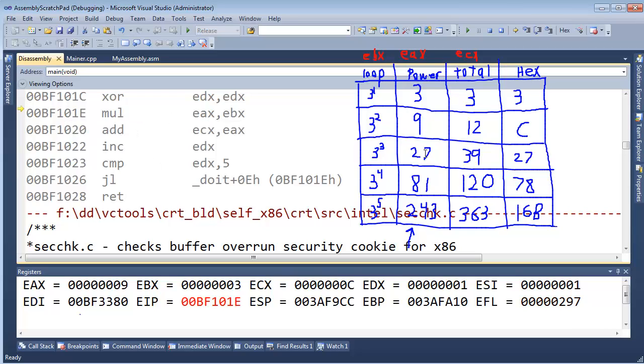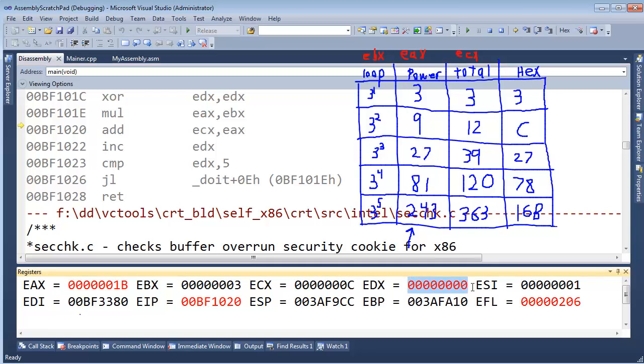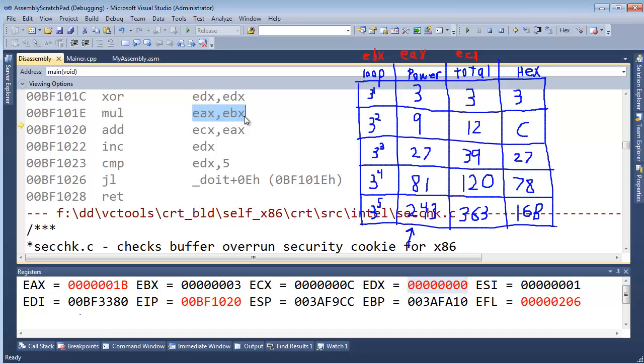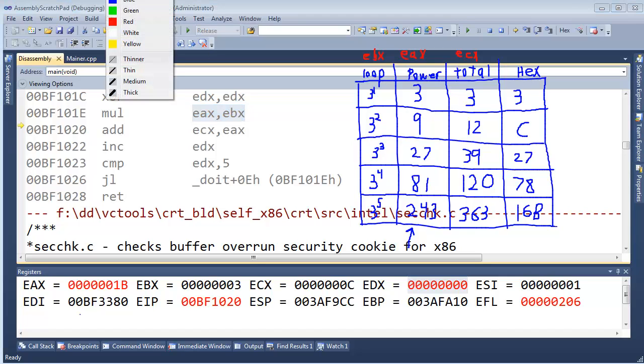All right, we need to do the multiply again, so 27. We need to multiply 9 by 3. Do you see it? You see EDX—why did that happen? When we say multiply, we're messing with EAX and EBX. What happened? Do you remember?